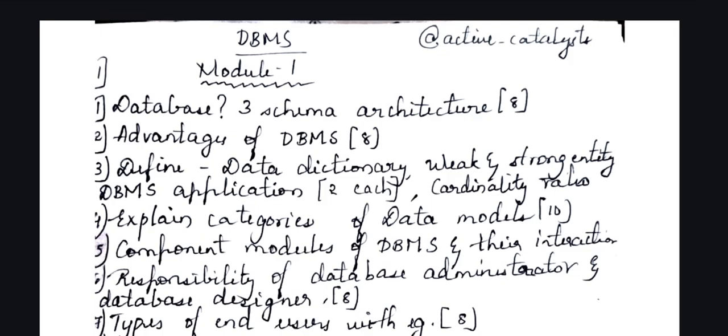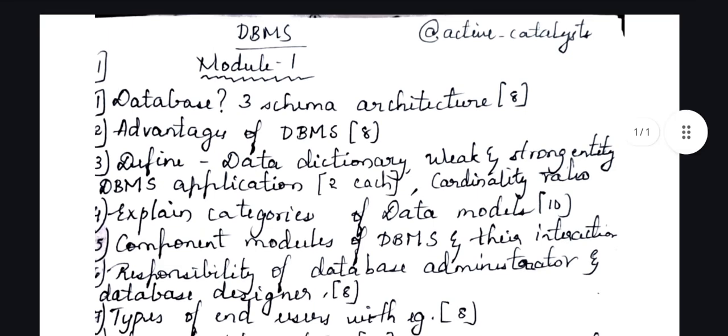The next question is advantages of DBMS, asked for eight marks. That means you have to write eight points with one or two lines of explanation for each point. Only then will you get the complete eight marks.